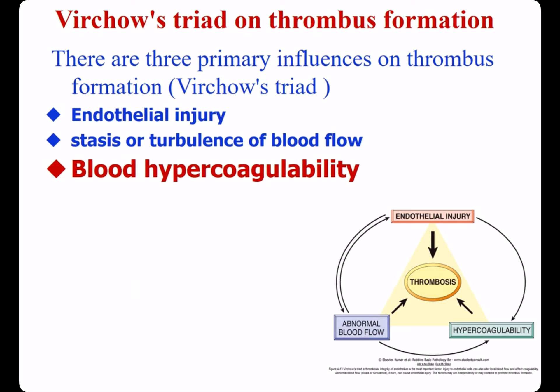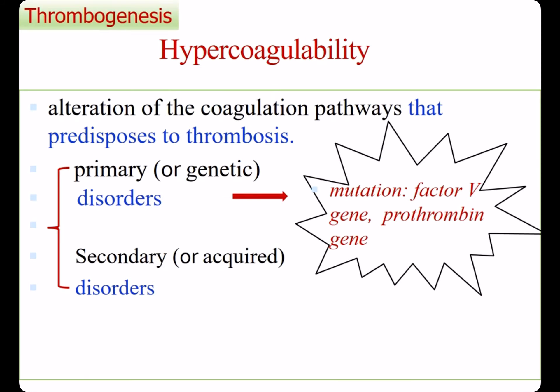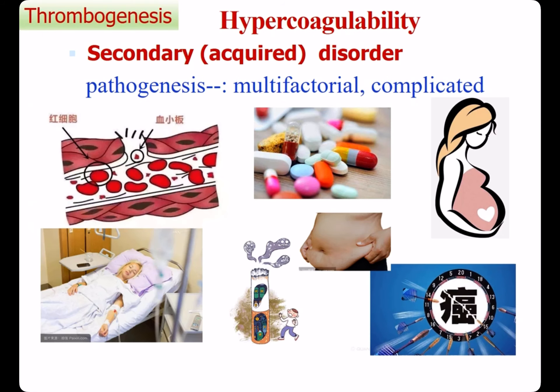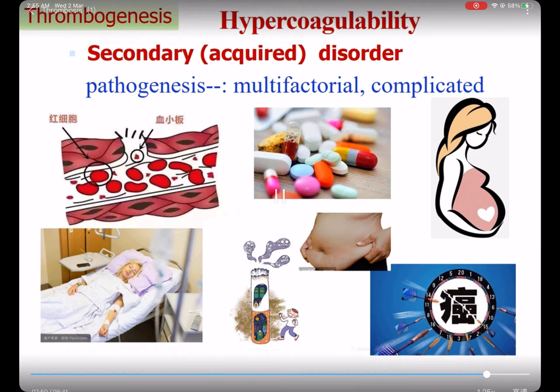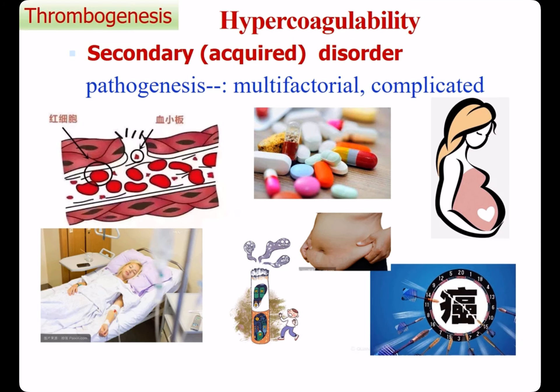The last factor is blood hypercoagulability. Blood hypercoagulability makes it predisposed to thrombosis. It can be divided into genetic hypercoagulability and acquired hypercoagulability. Common causes of genetic hypercoagulability are mutations in the factor V gene and the prothrombin gene. Common causes of acquired hypercoagulability include stasis or vascular injury, prolonged bed rest or immobilization, oral contraceptive use, state of pregnancy, smoking and obesity, and disseminated cancers releasing procoagulant products.